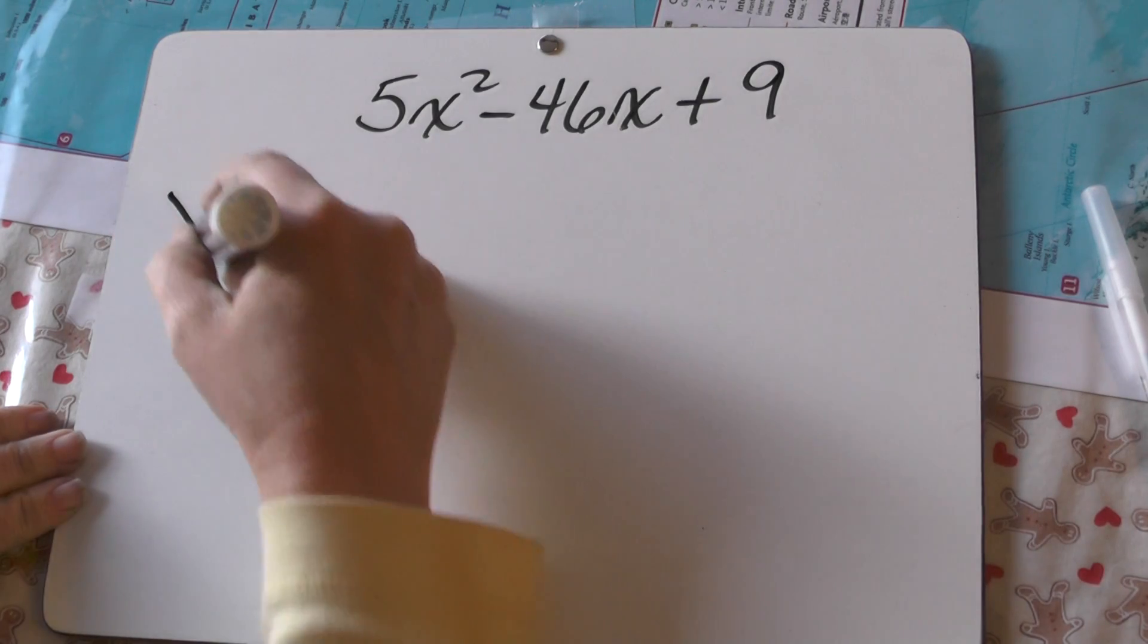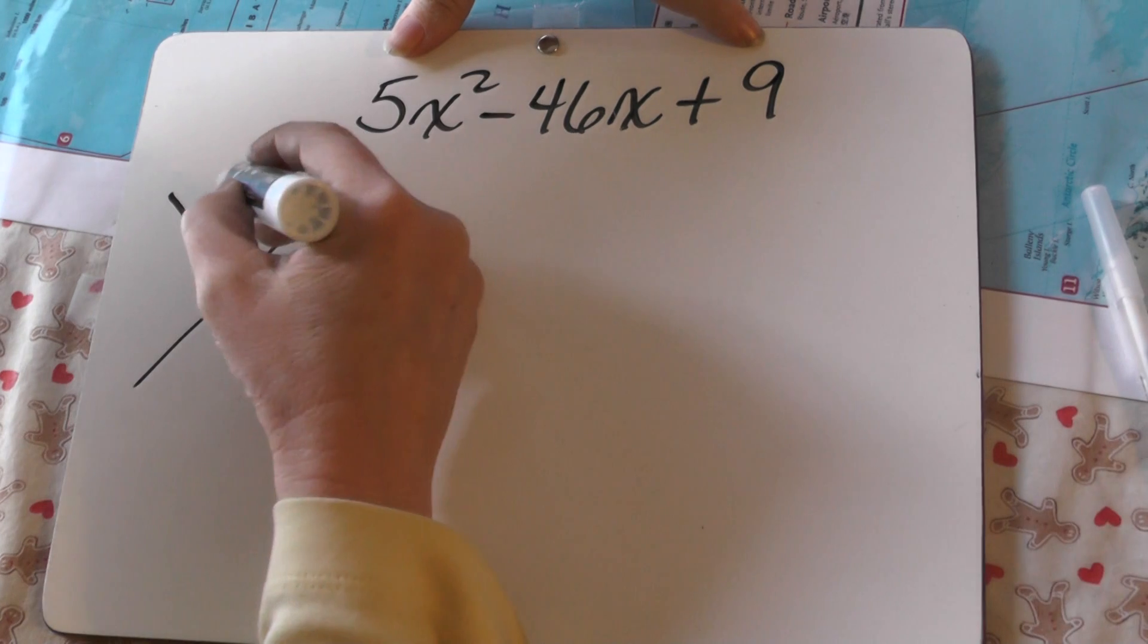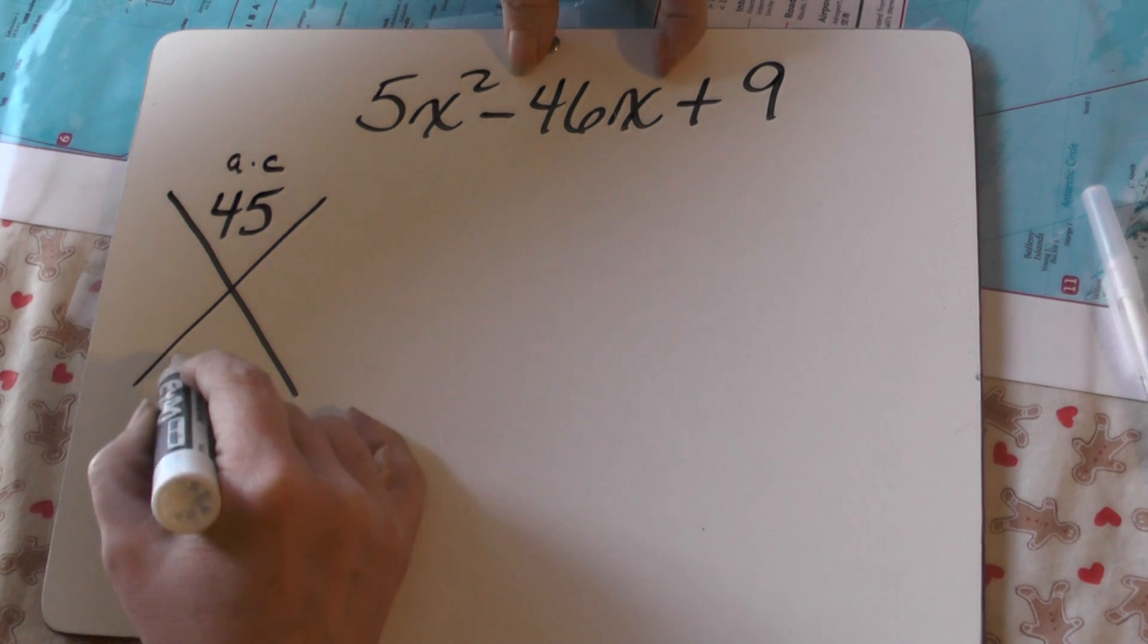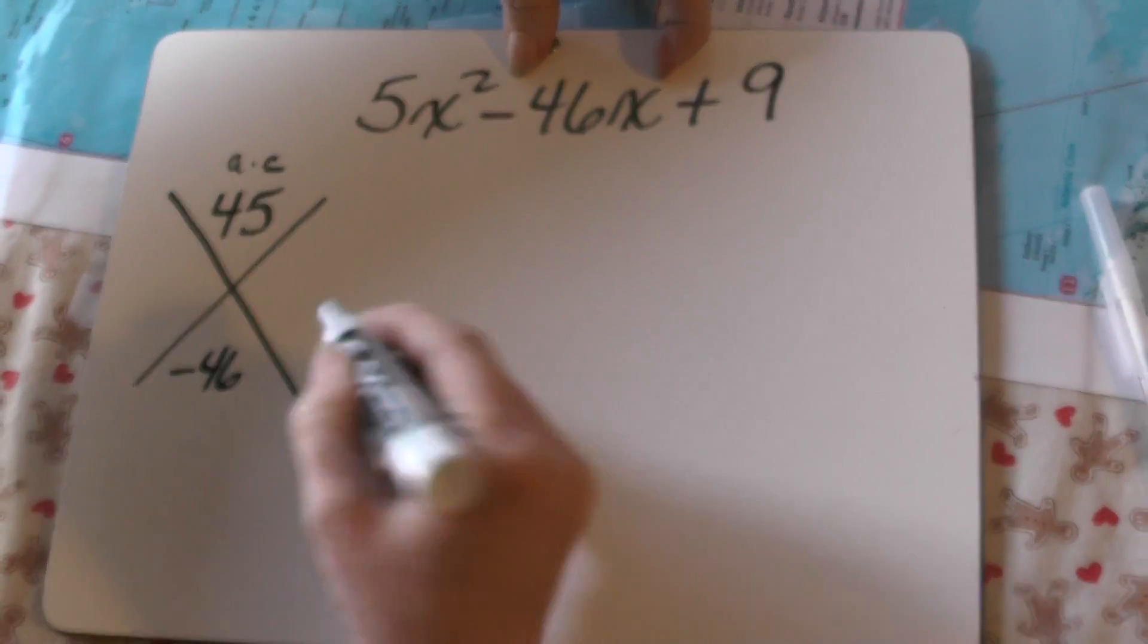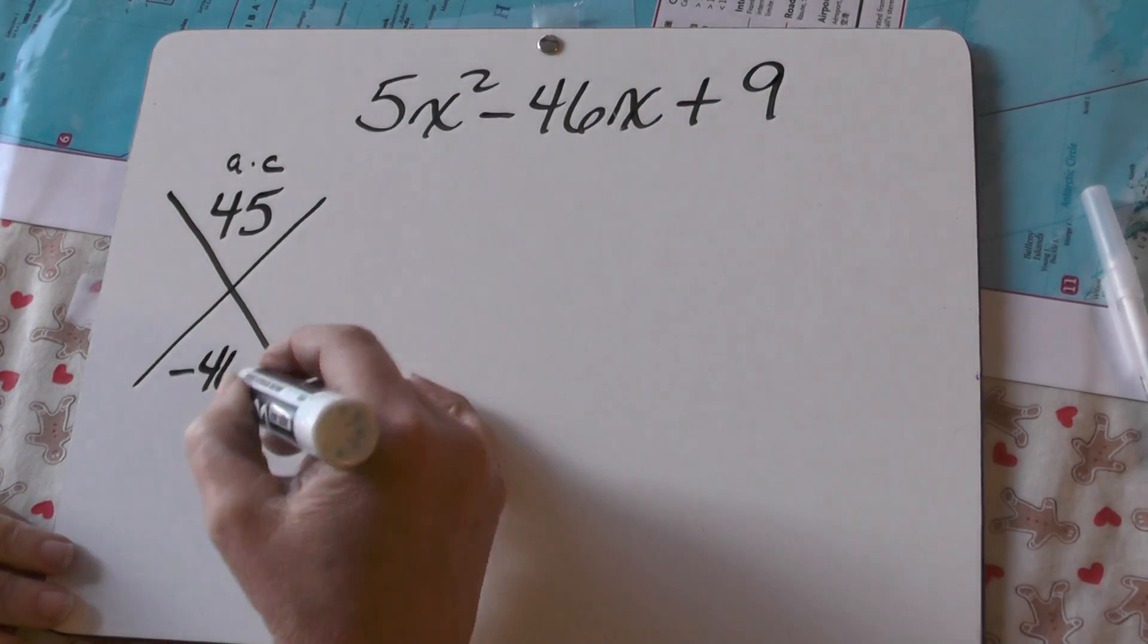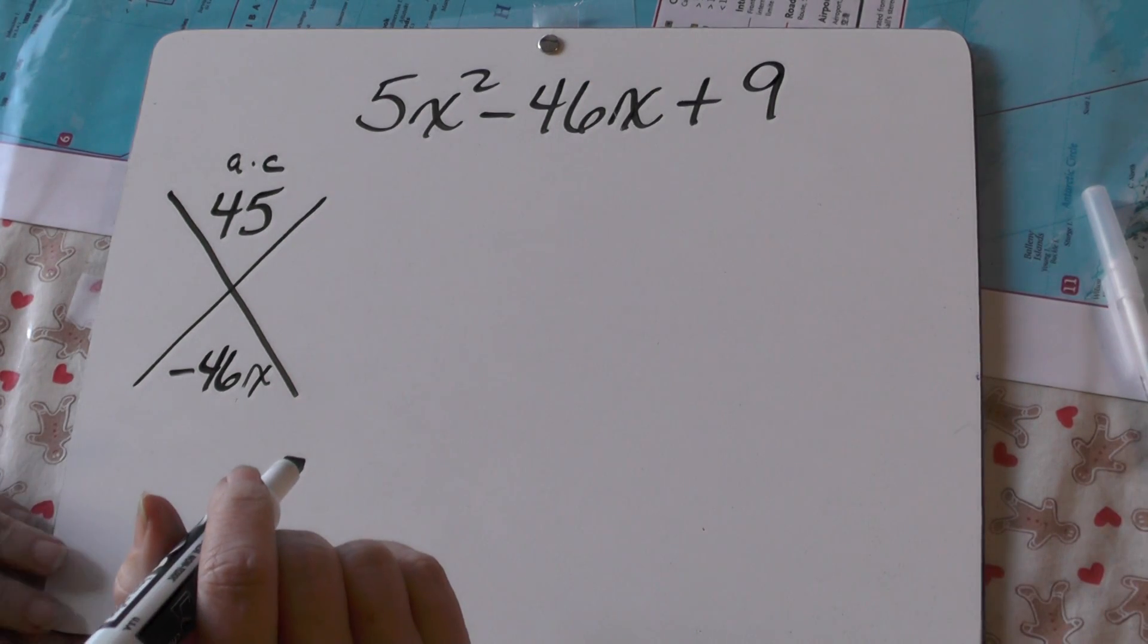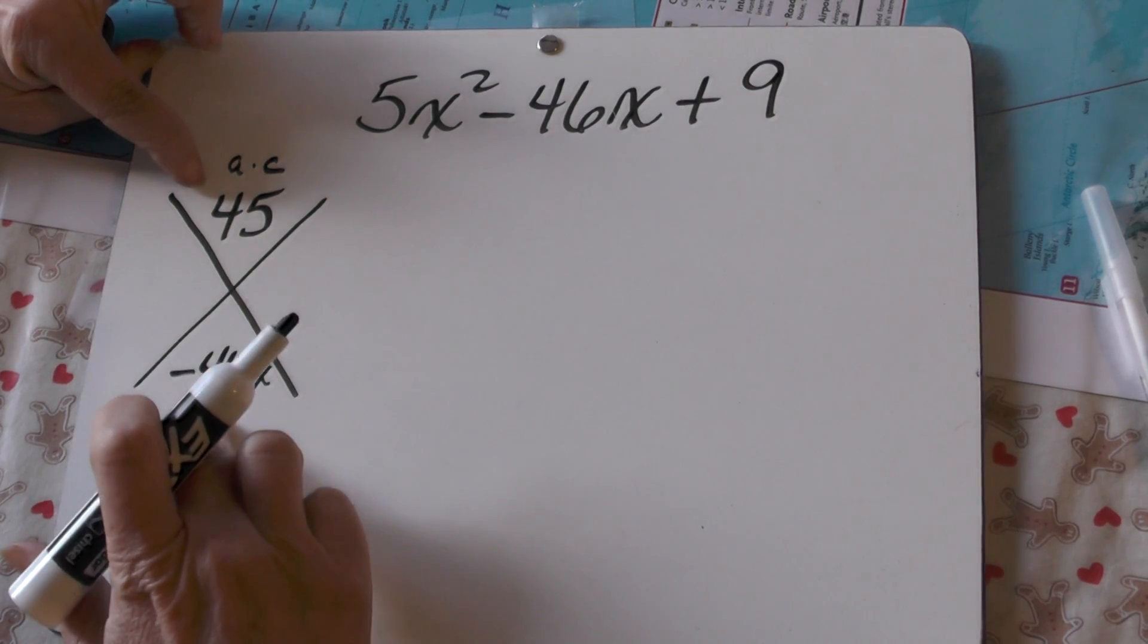Now, I'm going to start figuring out factors first. 5 times 9 is 45. That's my a times c. The middle coefficient is negative 46. And I could say negative 46x. That's another way. But I'm leaving the x out because I know it's there. You could do this, though, so you don't lose track of it. Especially if we have an equation that has a different variable.